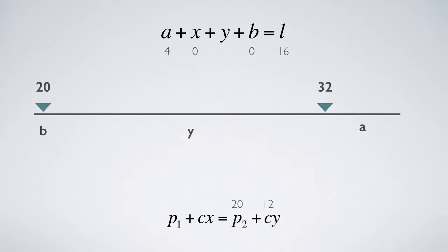For example, if L equals 16, A equals 4, but B equals 0. To keep only the A customers, X equals 0, so Y equals 16 minus 4, or 12. If C equals 1, P2 equals 20, then P1 equals 20 plus 12, or 32.